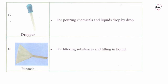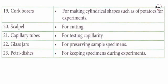Number sixteen, the dropper — very important for pouring chemicals and liquids drop by drop, used when adding small drops to an existing liquid. Number seventeen, the funnel — for filtering substances and filling in liquids. Number eighteen, cork borers — for making cylindrical shapes, such as cutting a cylinder of potato for an experiment. Number nineteen, the scalpel — used for cutting. Number twenty, capillary tubes — for testing capillary action.